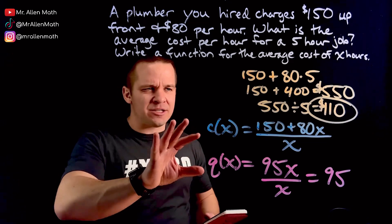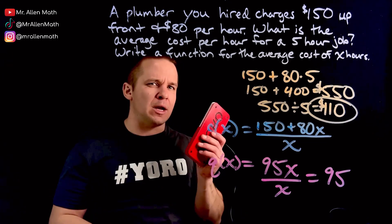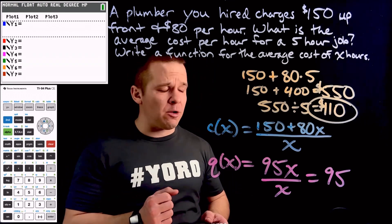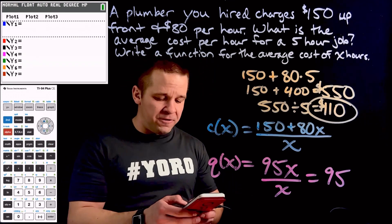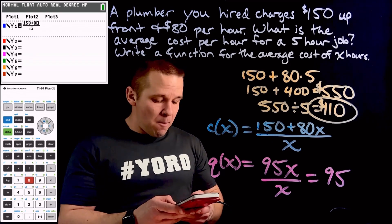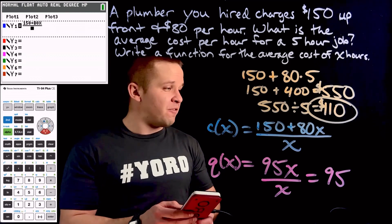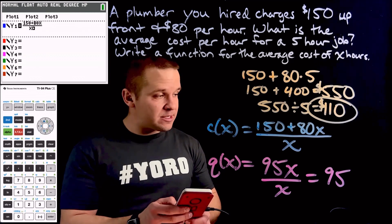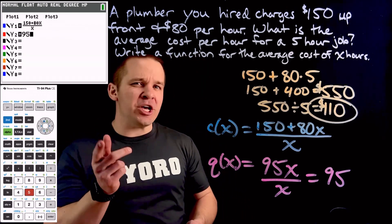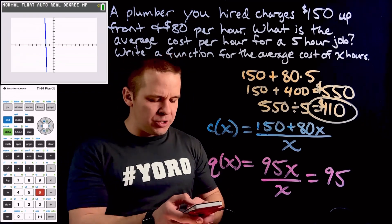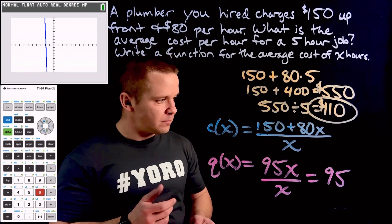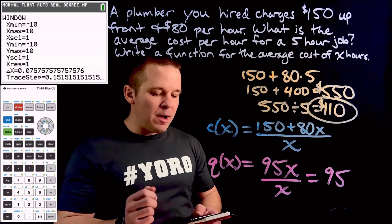Let's see where these guys start charging about the same. We can bust out our TI-84 Plus graphing calculator and clear whatever is in Y equals. I'm going to hit Alpha Y equals, hit Enter to get a fraction, and I'm going to have 150 plus 80X divided by X. Then I'll go into Y2 and pop in 95. Now I need to change my window a little bit, but let's hit Zoom 6 so we're all in the same window. I can't see much at all, so let's make some adjustments. I'll go to my window.